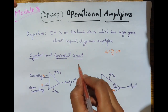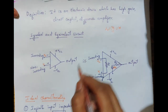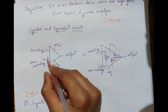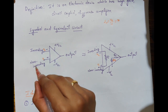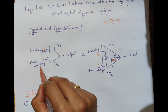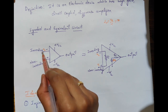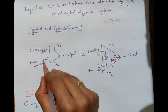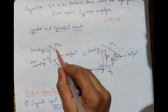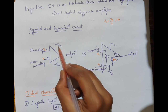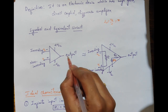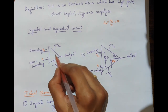Next we will see the symbol and the equivalent circuit of the operational amplifier. This operational amplifier has two input terminals. We call those input terminals the non-inverting terminal and the inverting terminal, where the plus symbol indicates the non-inverting terminal and the minus symbol indicates the inverting terminal. The voltages V1 and V2 are the non-inverting and inverting voltages respectively. Two supply voltages, plus VCC and minus VCC, and one output terminal are present. This is the symbol of the operational amplifier.